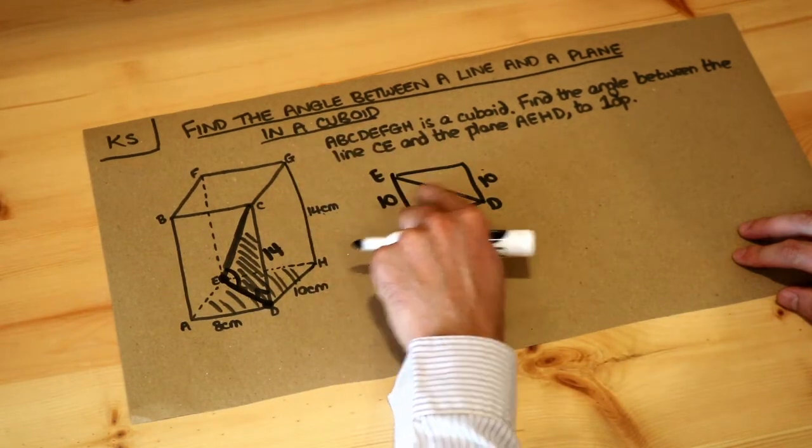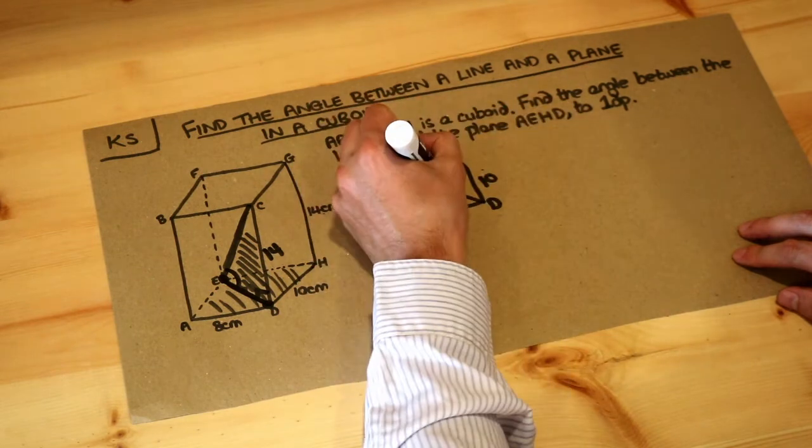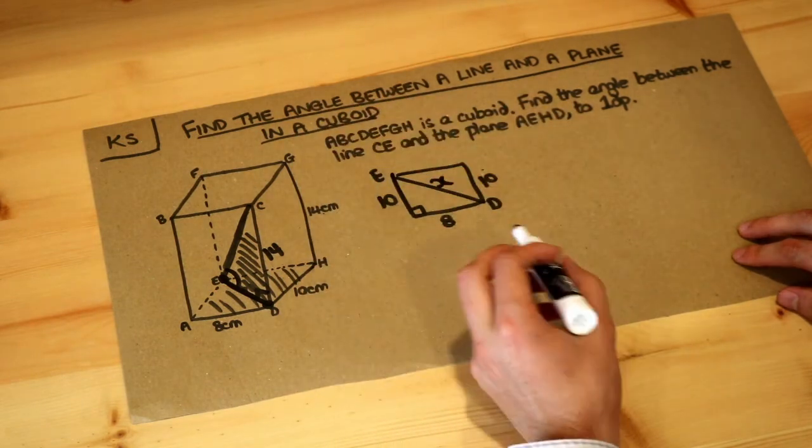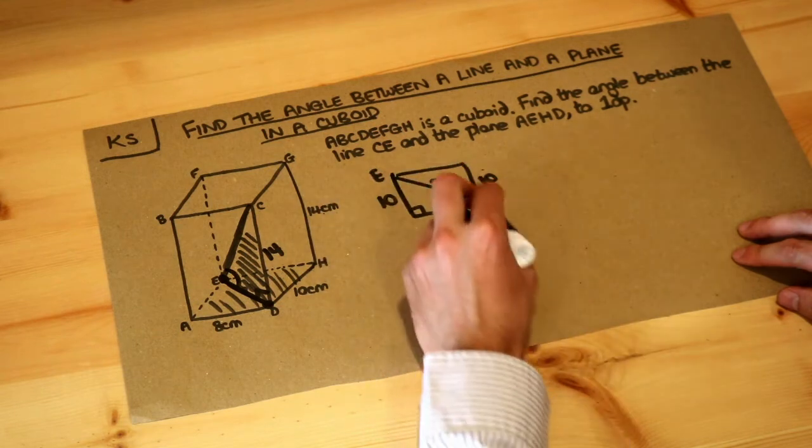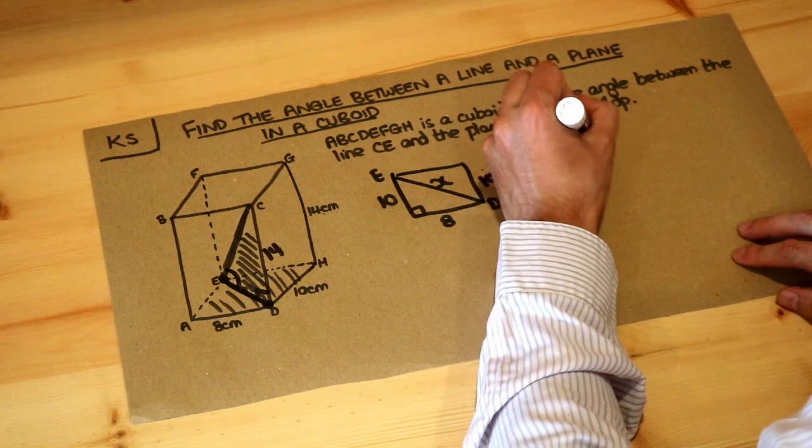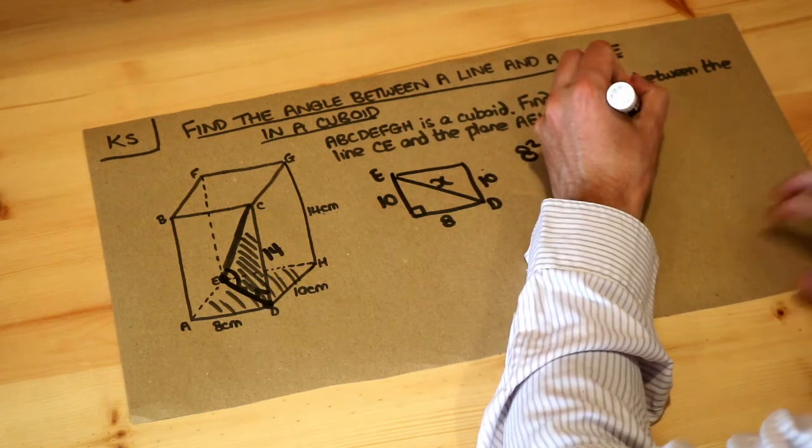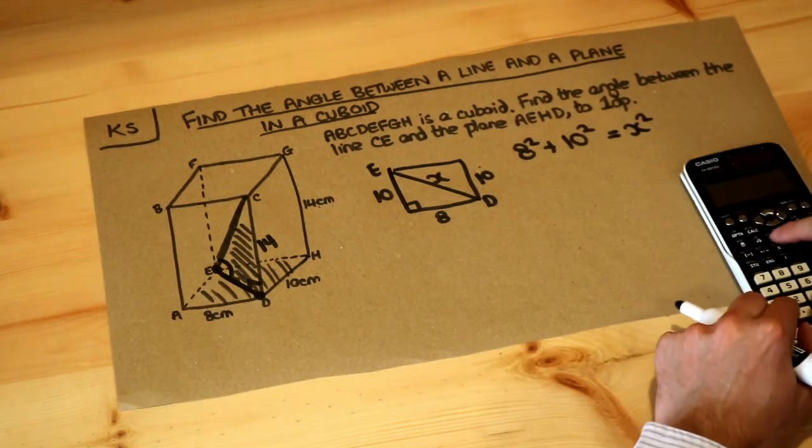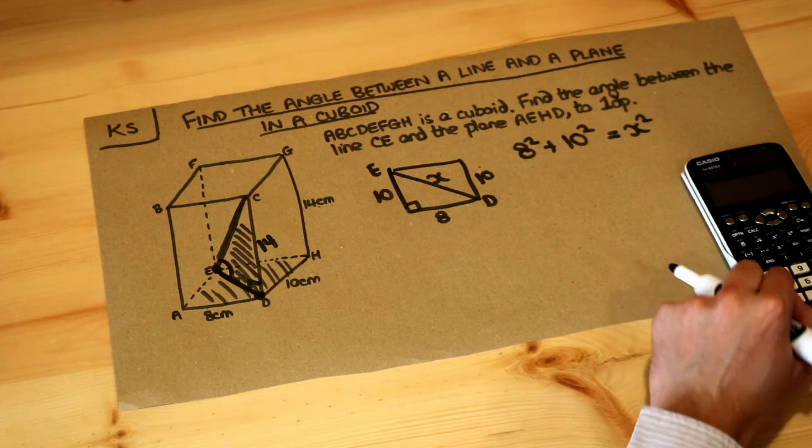We've got these two lengths and we're trying to find the third length. Let's just call that X. Then using Pythagoras theorem, A squared plus B squared equals C squared with the hypotenuse as C, so 8 squared plus 10 squared equals X squared. And if I do 8 squared plus 10 squared on my calculator and then square root it, I get 2 root 41.